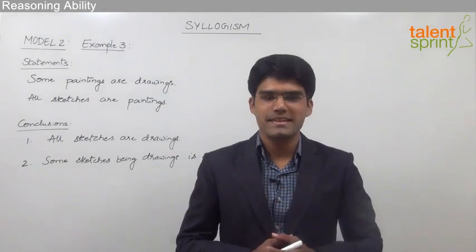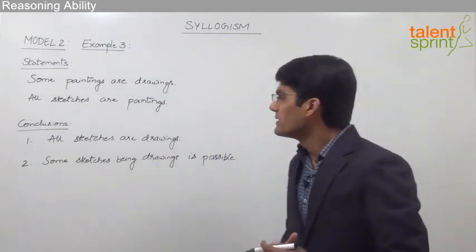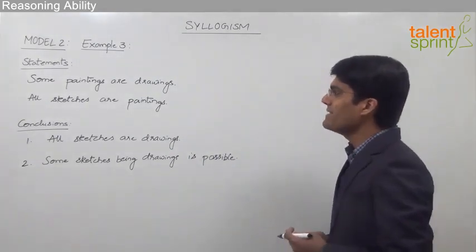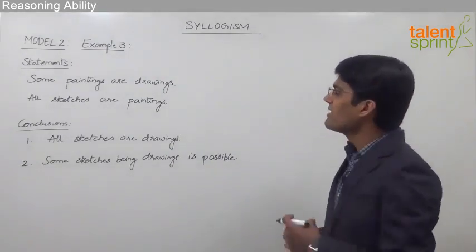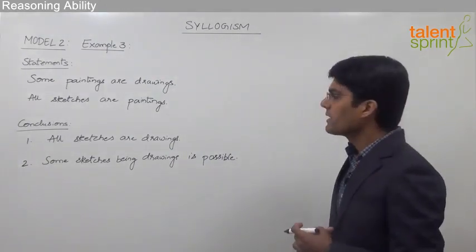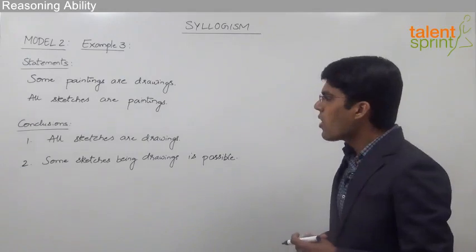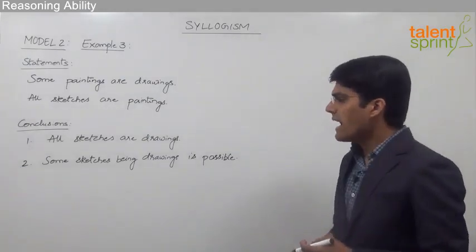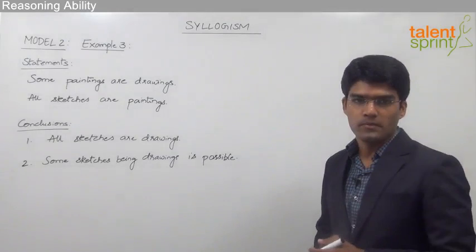Let us now take the third example from Model 2. The given statements are: some paintings are drawings, and all sketches are paintings. The two given conclusions are: all sketches are drawings, and some sketches being drawings is possible.